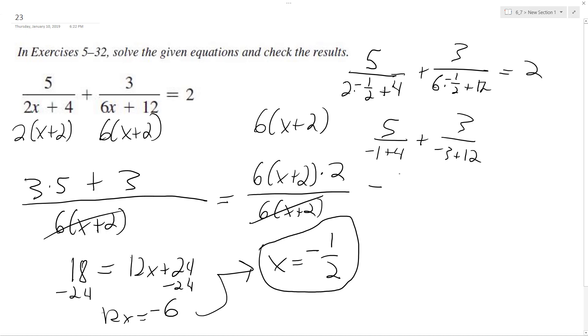This ends up being negative 5 over 3 minus or plus 3 over 9. So this is negative 5 thirds plus 1 third, which is equal to negative 4. Something's not right.